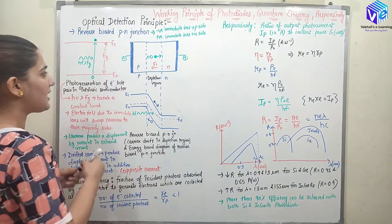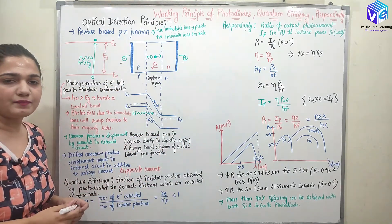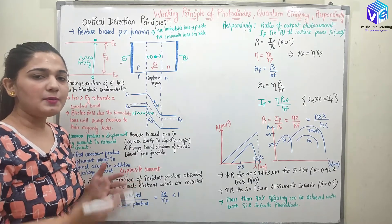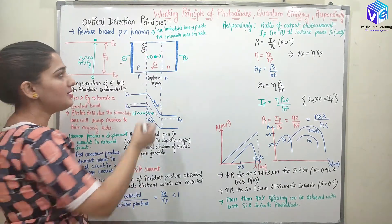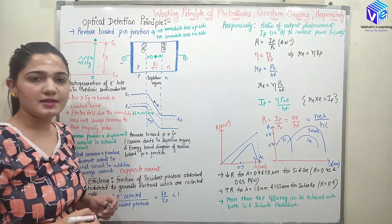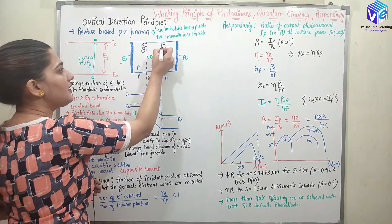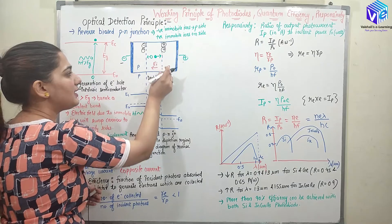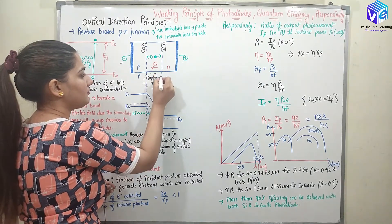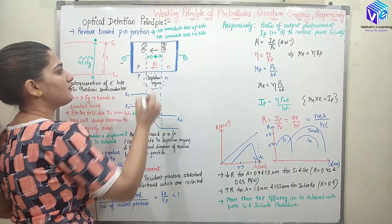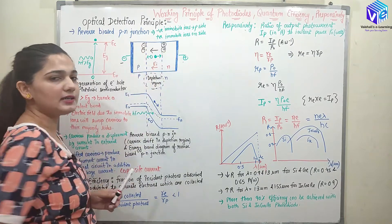In the reversed biased PN junction, the P side is connected to the negative end of the battery, or we can say the N side is connected to the positive terminal of the battery. In the PN junction we have some negative immobile ions deposited on the P side, and in the N side we have the positive immobile ions. They are not moving — immobile means they are not moving — and they have formed a layer. So in between these positive and negative immobile ions we have the depletion region. Here we have the intrinsic electric field generated in the depletion region, which is directed from the positive immobile ion to the negative immobile ion.